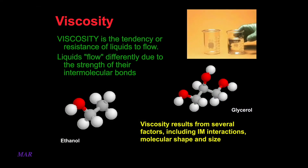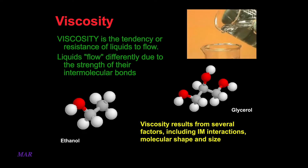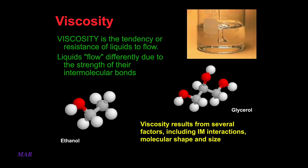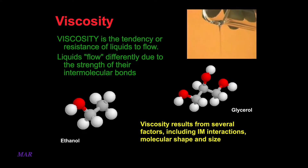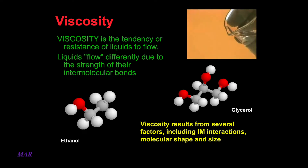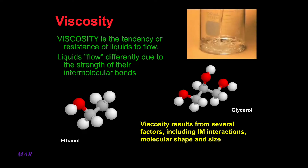The viscosity of a liquid depends on the strength of its intermolecular forces. Glycerol has relatively strong intermolecular forces and is rather viscous — its resistance to flow is high. Ethanol, by contrast, has weaker intermolecular forces. It flows easily and has low viscosity.